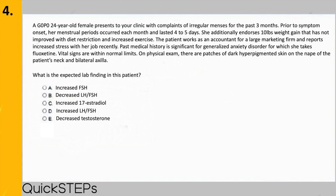Hopefully you identified this as the classic presentation for polycystic ovarian syndrome. The typical PCOS presentation is an overweight female demonstrating signs of insulin resistance such as elevated glucose or acanthosis nigricans — those hyperpigmented patches on the skin around the axilla or neck — with increased testosterone levels and irregular menses. One thing Step 1 loves to test is that PCOS has an increased LH-to-FSH ratio, answer choice D. Hyperinsulinemia accompanying PCOS affects the hypothalamic-pituitary axis to shift the ratio by increasing LH more than FSH.